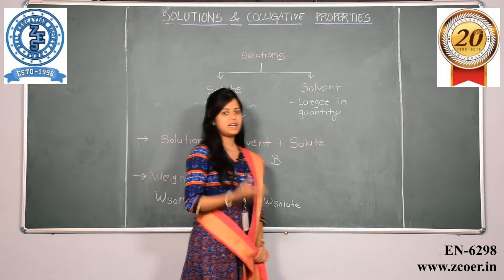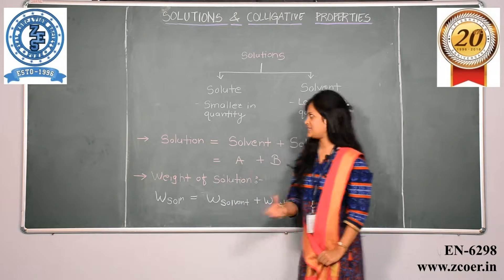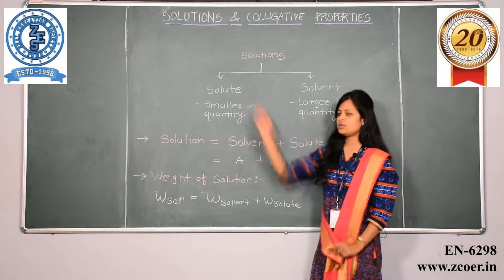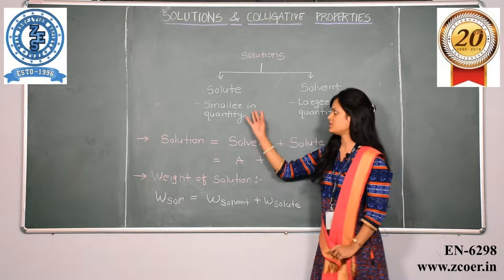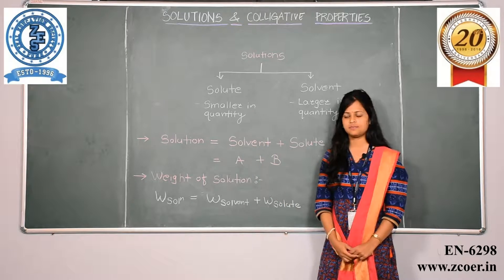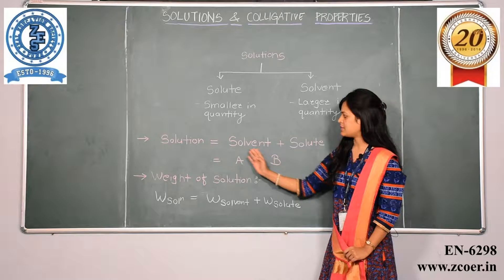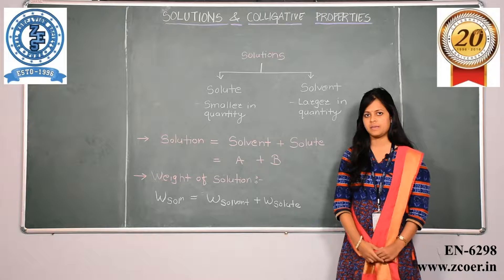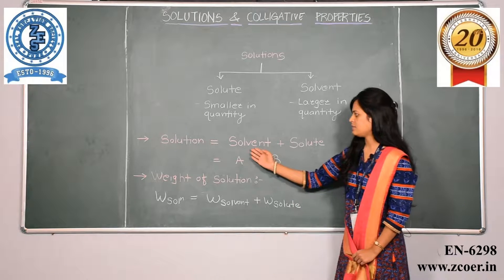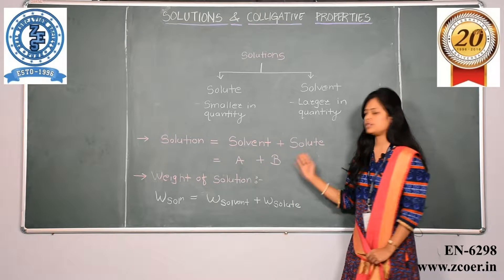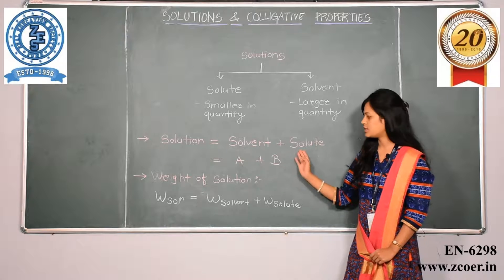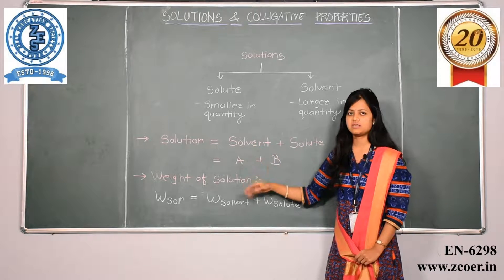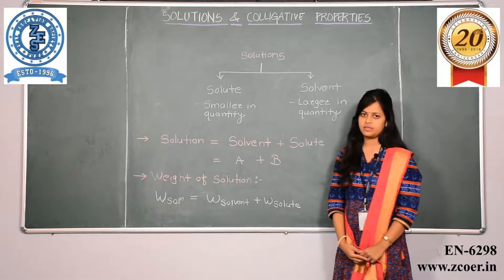Solvent is the component which is present in large quantity, whereas solute is the component which is present in smaller quantity. A solution can be defined as solvent plus solute — here the solvent is A and the solute is B. For example, the solvent can be water and the solute can be sugar. Sugar is less in quantity, that is why it is called the solute; water is present in more quantity, that is why it is called the solvent.